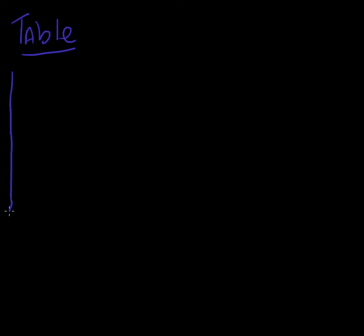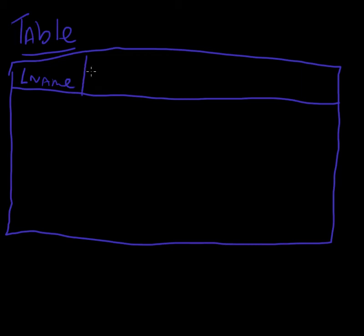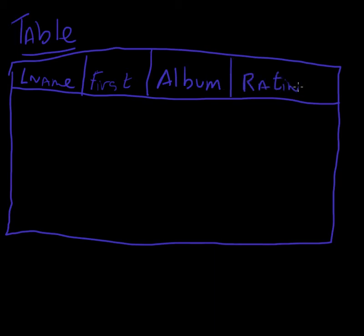You can think of a table as kind of a spreadsheet. We're going to have our columns along the top. So let's say I want to store my music collection. I'm probably going to want to store the last name of the artist, the first name of the artist, the actual album or CD, and maybe I'll give it a rating.